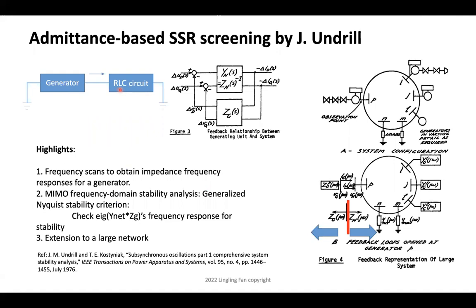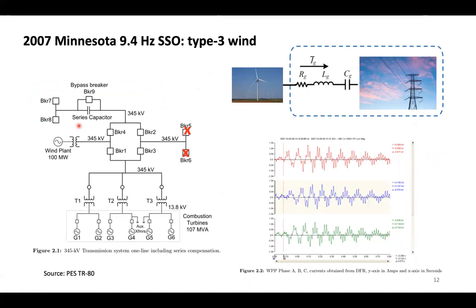In the 1970s and 1980s, much study was done on SSR. John Andraw, who is still actively working in WECC modeling groups, started using admittance-based screening — placing the generator and RLC circuit as impedance circuits, constructing a feedback loop from their admittances, and using loop gain for stability analysis with the generalized Nyquist criterion. He also proposed doing frequency scans using data — injecting perturbations and measuring frequency responses — a sophisticated approach from his 1976 paper.